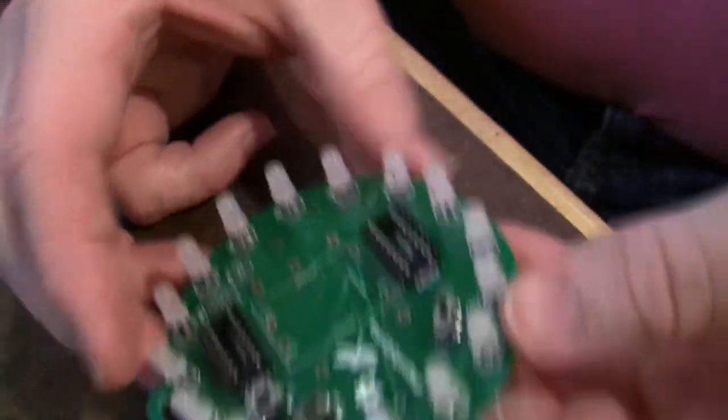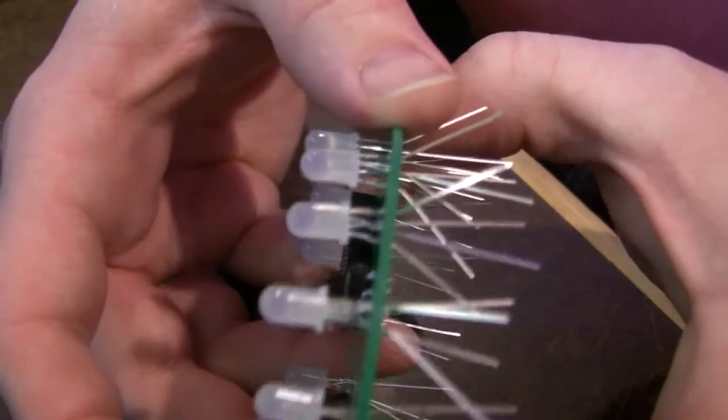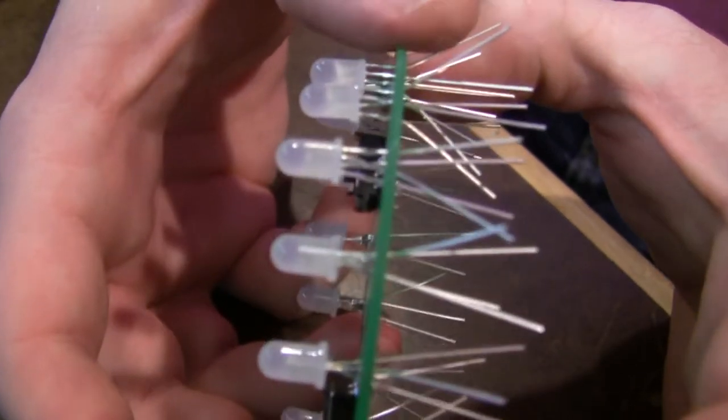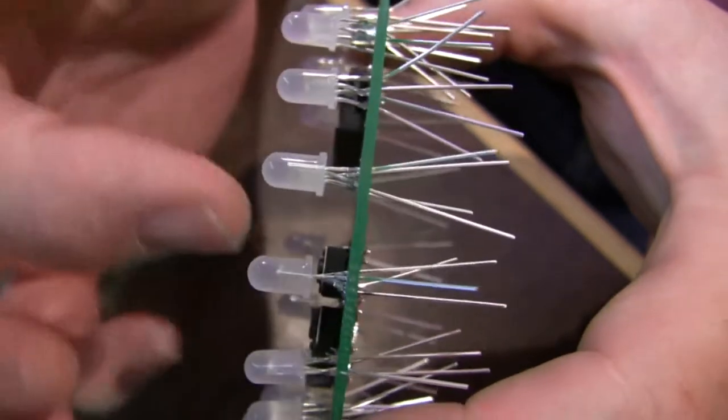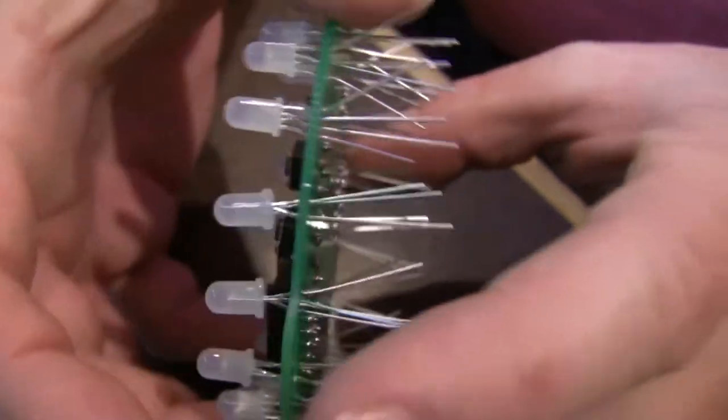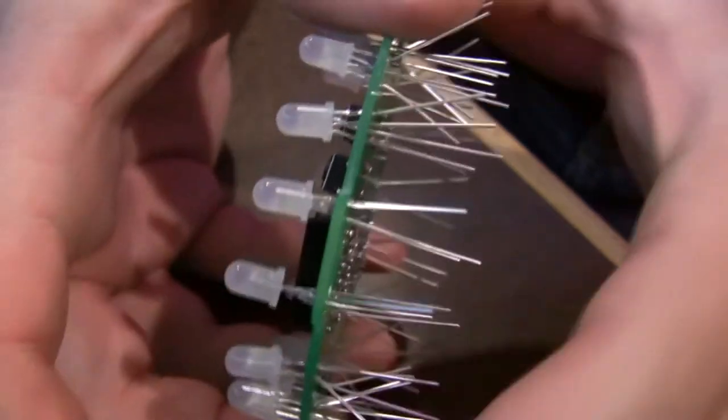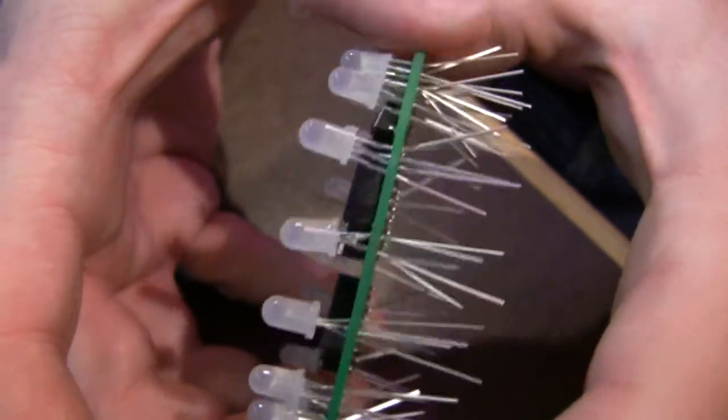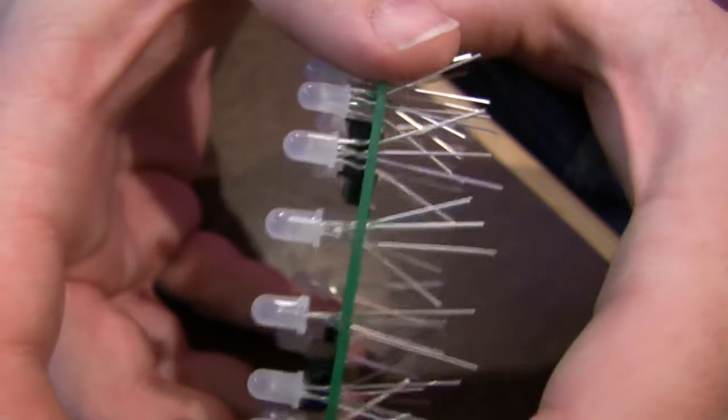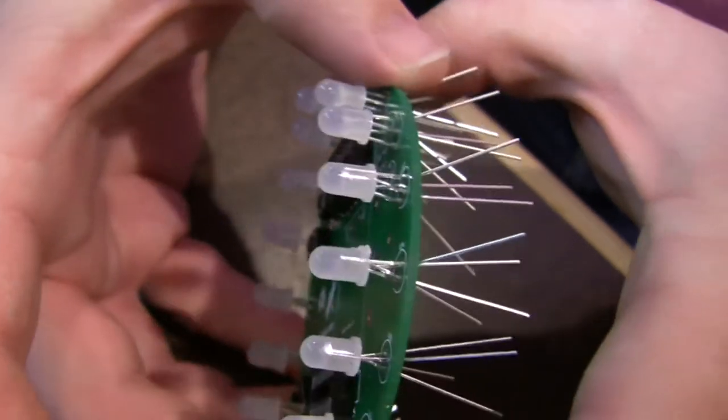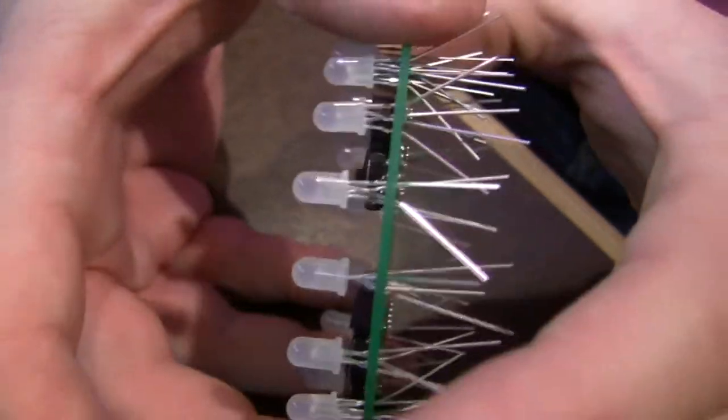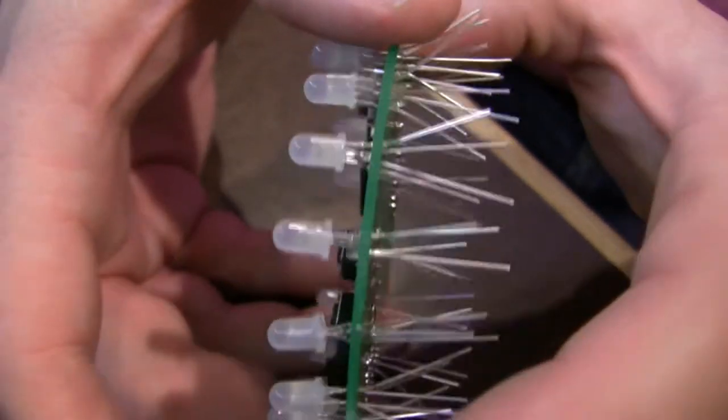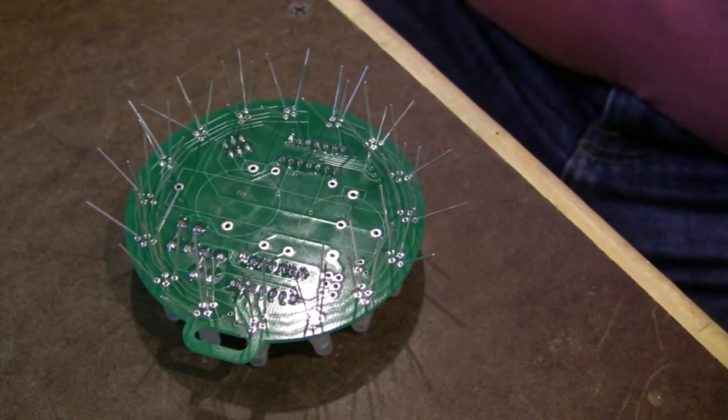I've got all the LEDs in now. The thing to do now is to slowly turn the board and make sure that all of the wires, the line of the wire points back towards the center of the board. That's the way they're supposed to be. If you've got one that's not doing that, then you got it inserted wrong. Pull it out and put it back in again the right way. I'm going to just go ahead and solder these now.